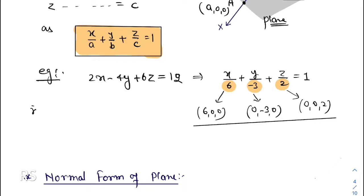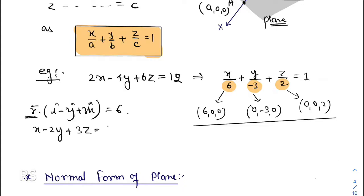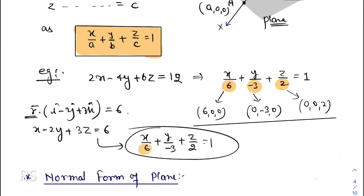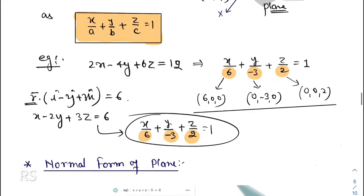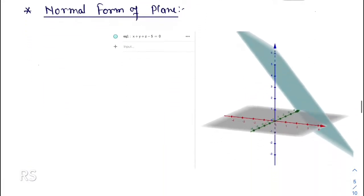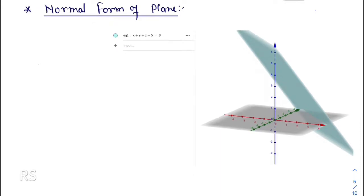For example, the plane 2x − 4y + 6z = 12, divided by 12, gives x/6 + y/(−3) + z/2 = 1. So x-intercept is 6, y-intercept is −3, and z-intercept is 2. Similarly, if a plane is given in vector form such as r · (i − 2j + 3k) = 6, we convert to Cartesian: x − 2y + 3z = 6, then divide by 6 to get x/6 + y/(−3) + z/2 = 1, giving the same intercepts.